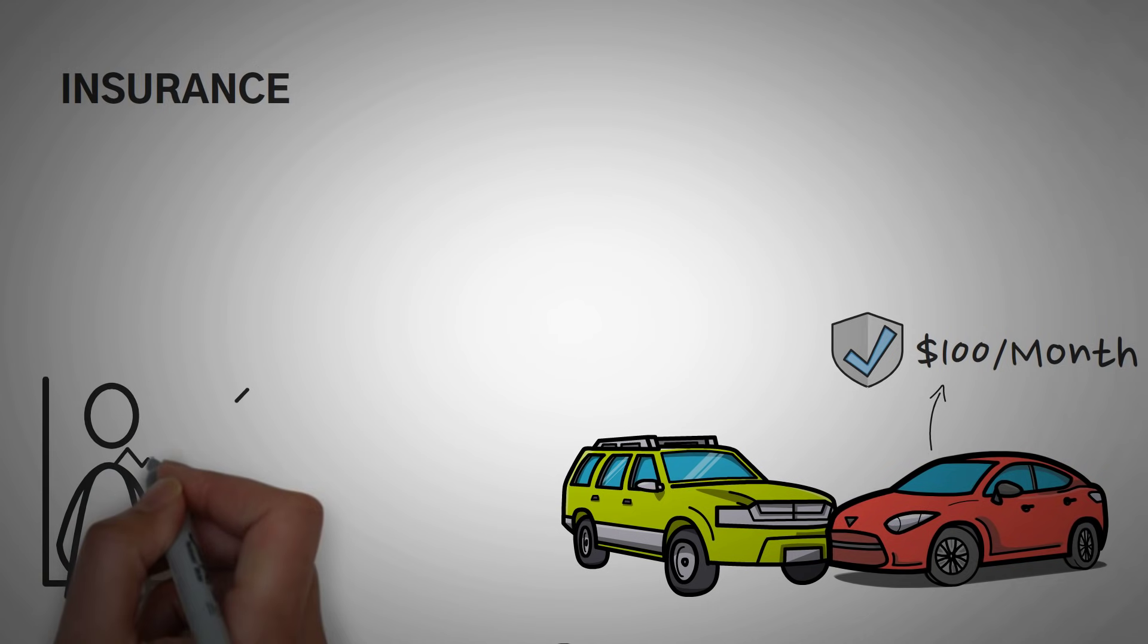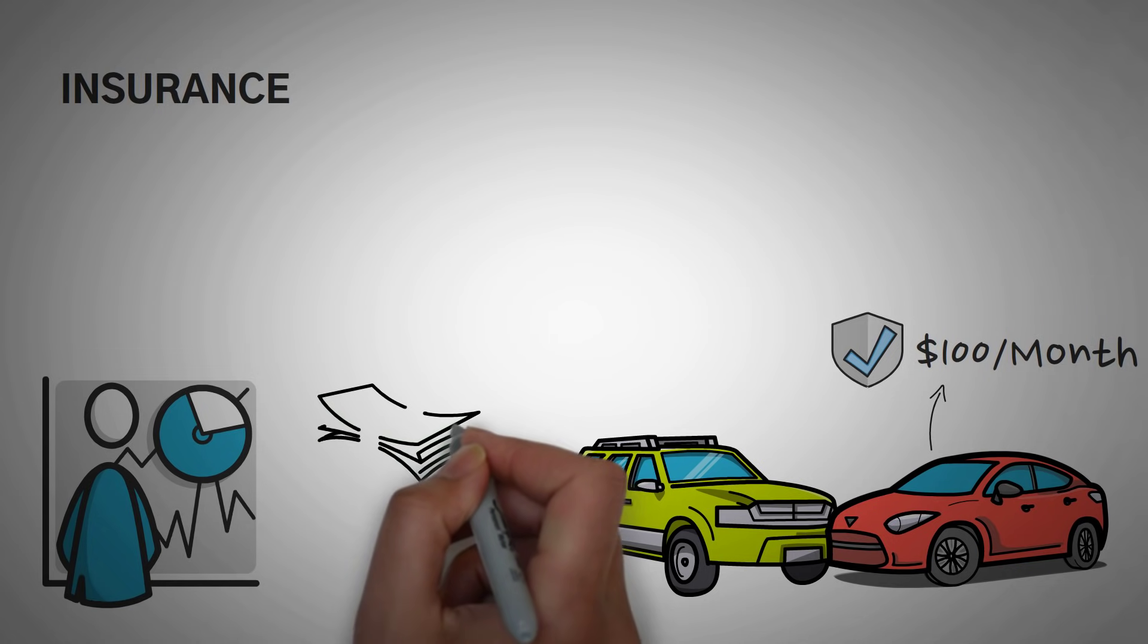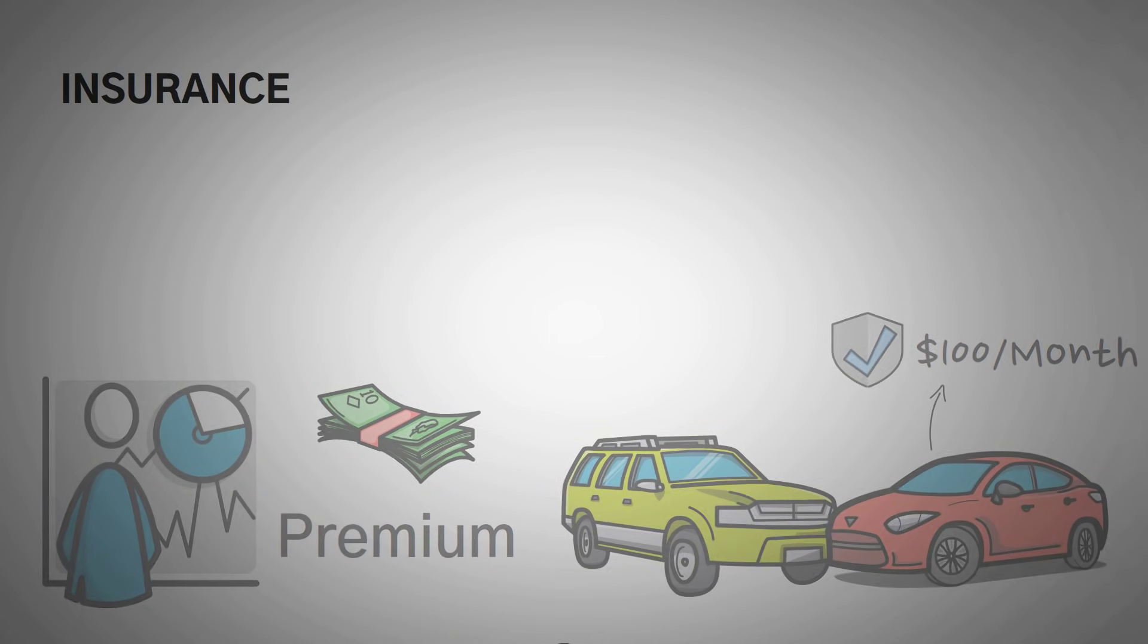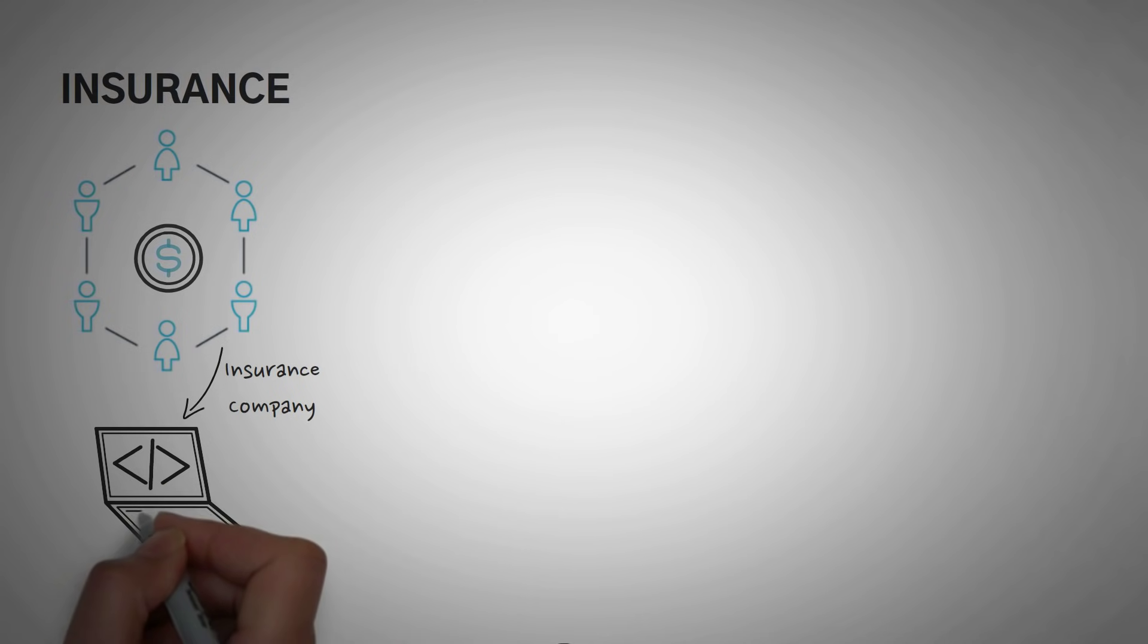They use statistics to predict how many of their drivers will crash their cars, and then use this data to predict how much they would have to pay each year to determine what the monthly price of the insurance should be, which is also called a premium. Well, with decentralized finance, the insurance company can be code.